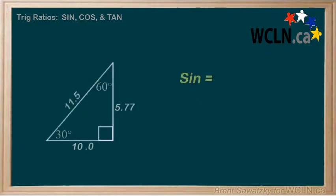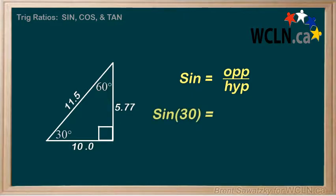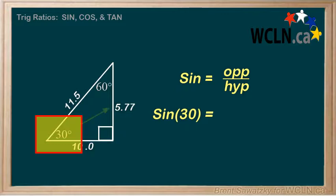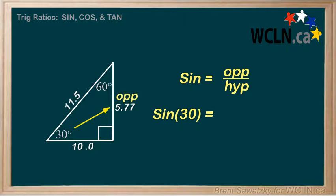Sine refers to the ratio of the opposite side length over the hypotenuse side length. For example, if we said the sine of 30, we would know that we're using the 30 here as our reference angle. The opposite side to the 30 is over here, in this case, 5.77. And we put it over our hypotenuse, in this case, 11.5.